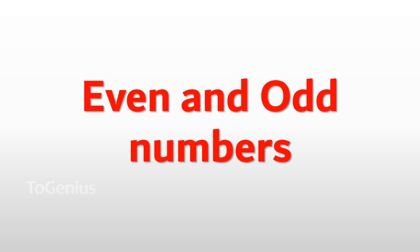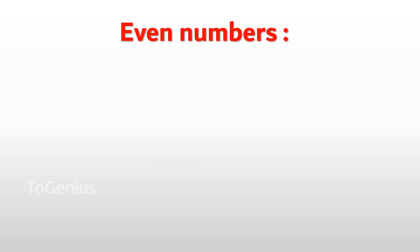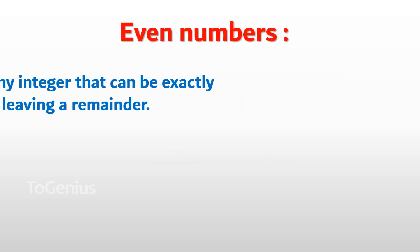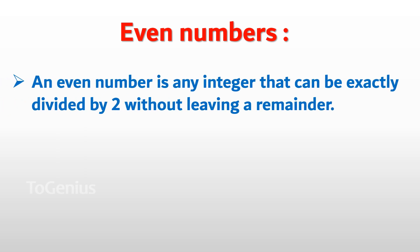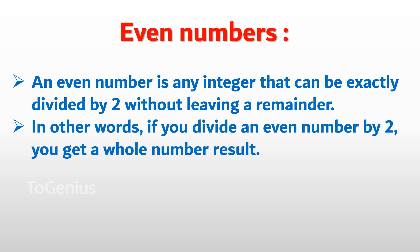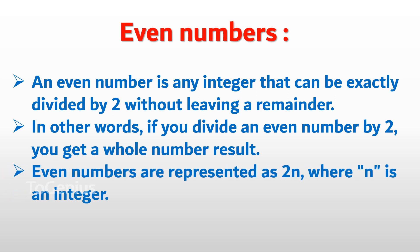Even and odd numbers. First, even numbers. An even number is any integer that can be exactly divided by 2 without leaving a remainder. In other words, if you divide an even number by 2, you get a whole number result. Even numbers are represented as 2n, where n is an integer.